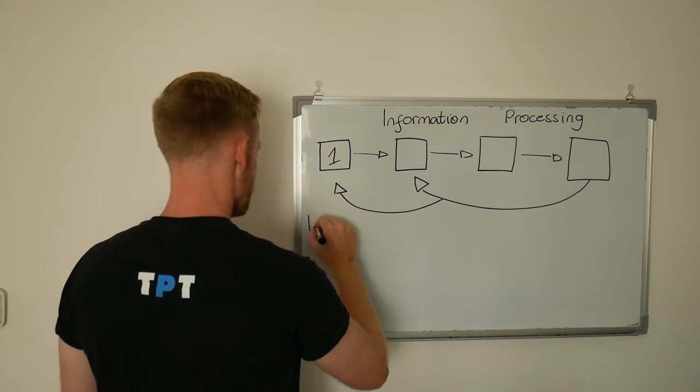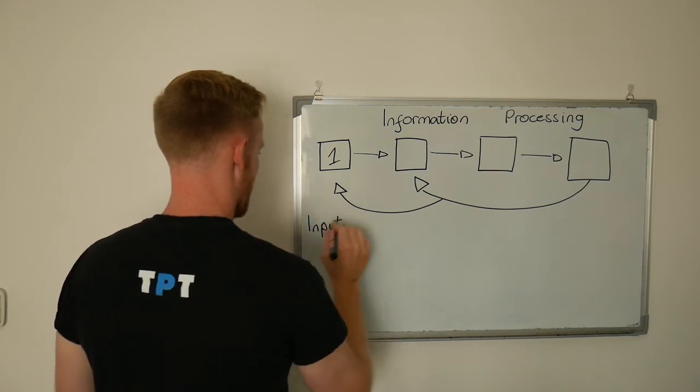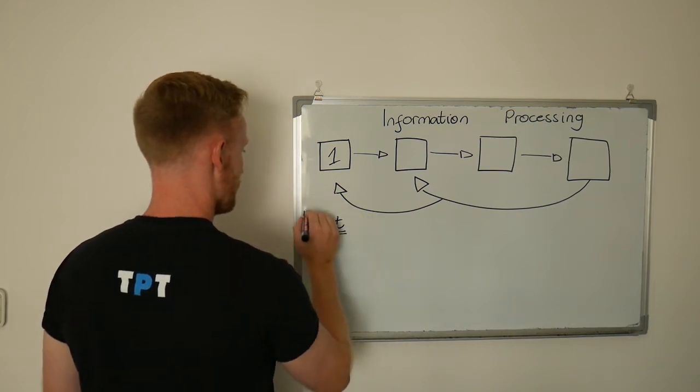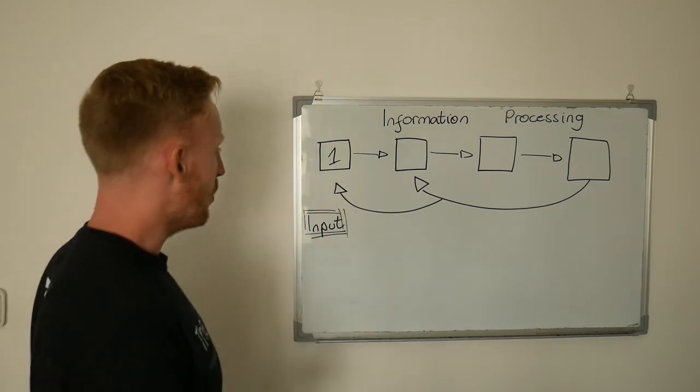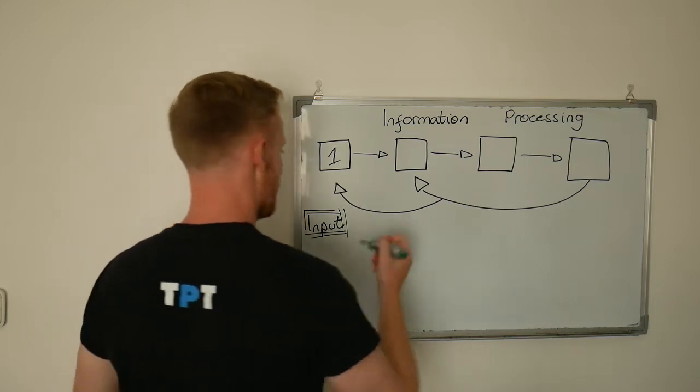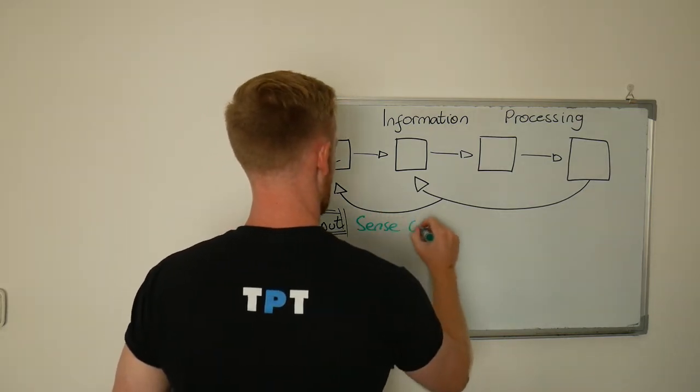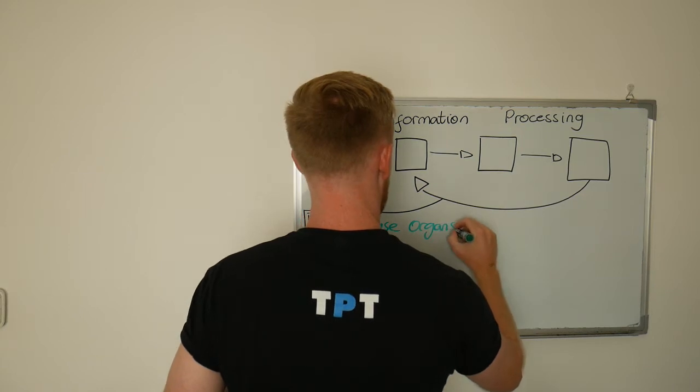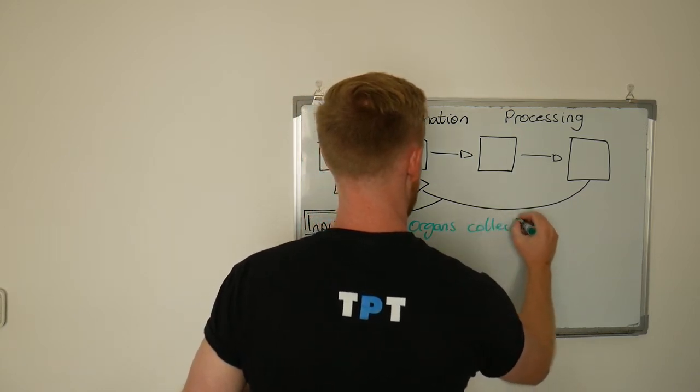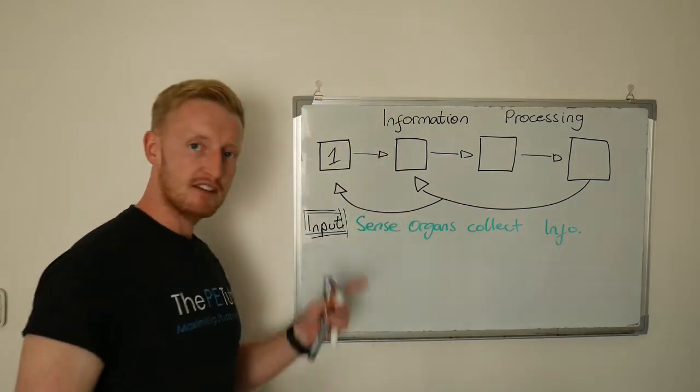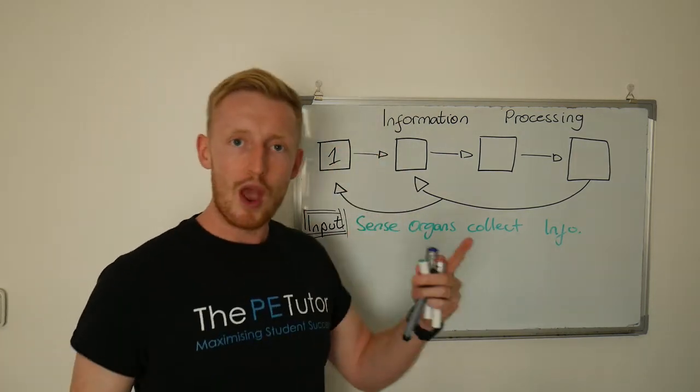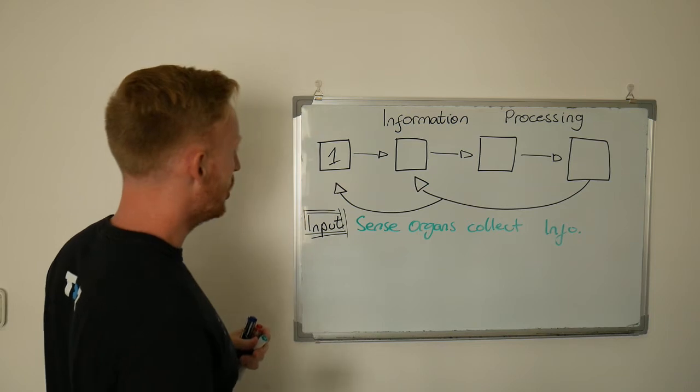Which is our input. So our input section of information processing. What is going on in input? Well, we've got our sense organs picking up information, so sense organs collect info. If we were to put this as a question, this is us working out where we are. What's going on around us?